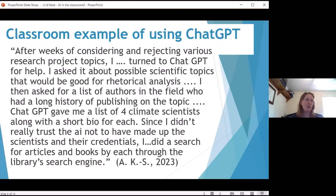And here's a classroom example from one of my students. They said after weeks of considering and rejecting various research project topics, I turned to ChatGPT for help. I asked about possible scientific topics that would be good for rhetorical analysis. I then asked for a list of authors in the field who had a long history of publishing on the topic. ChatGPT gave me a list of four climate scientists along with a short bio for each. Since I didn't really trust the AI not to have made up the scientists and their credentials, I did a search for articles and books by each through the library search engine. So this student kept spinning their wheels trying to figure out a topic. They were interested in climate science, but they weren't sure how to narrow that topic down, and ChatGPT gave them a good start on that.